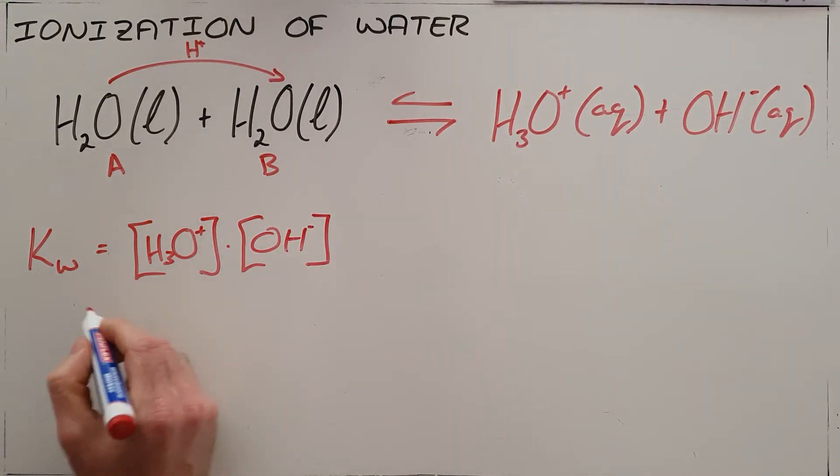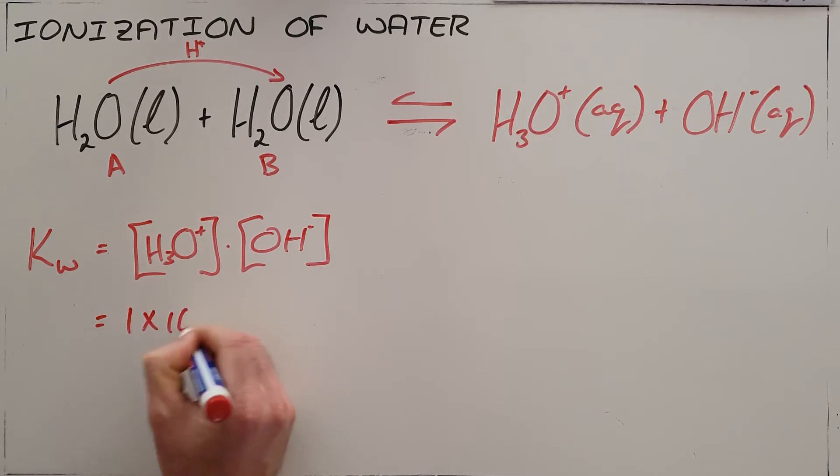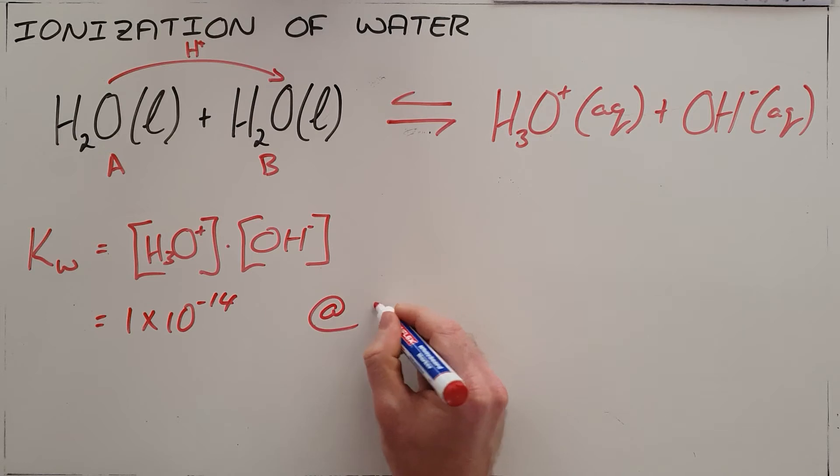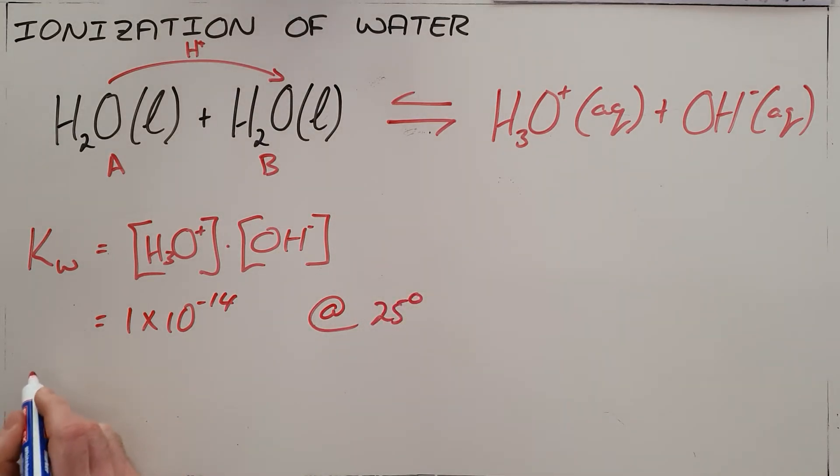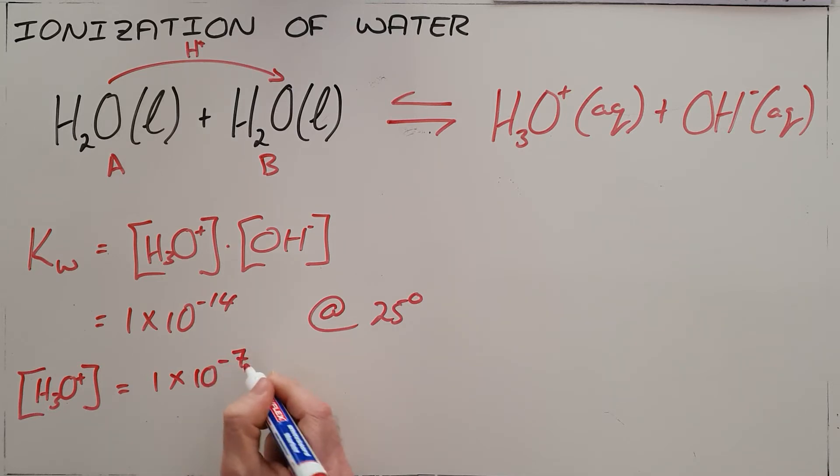Experimentally, this value is found to be 1 times 10 to the power of negative 14 at 25 degrees Celsius. What this tells us is that the concentration of hydronium ions in this solution is 1 times 10 to the minus 7 moles per cubic decimeter.